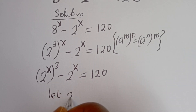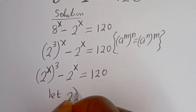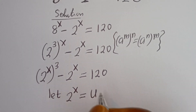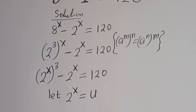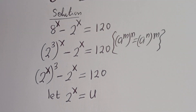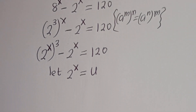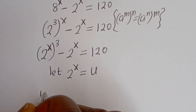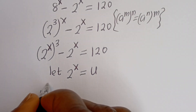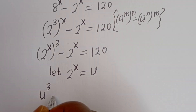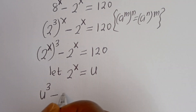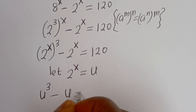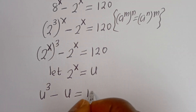Let 2 to the power of x equal u. Then from here we have u to the power of 3 minus u is equal to 120.